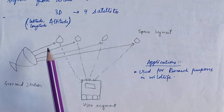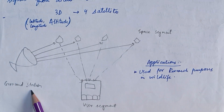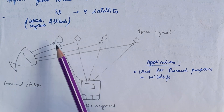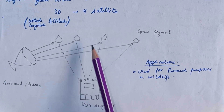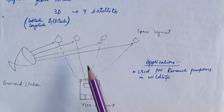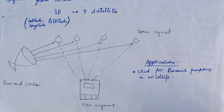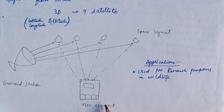Ground Station is the one that monitors satellites. The Space Segment contains 32 satellites in total — 24 core satellites and 8 reserved satellites. The User Segment is the receiver device.